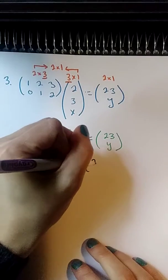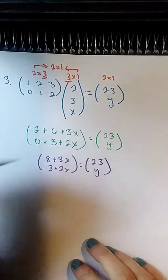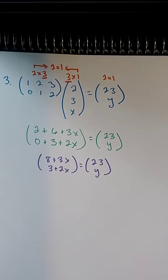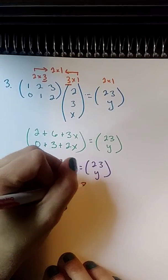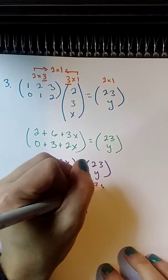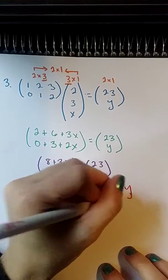And each one of those is going to be able to be compared with the elements on the right. So knowing what I know about matrices and how their elements are equal, I know 8 plus 3x must equal 23, and I also know that 3 plus 2x must equal y.